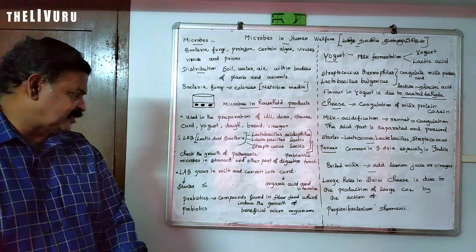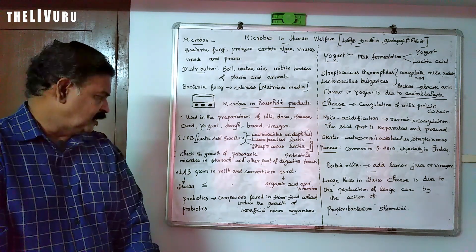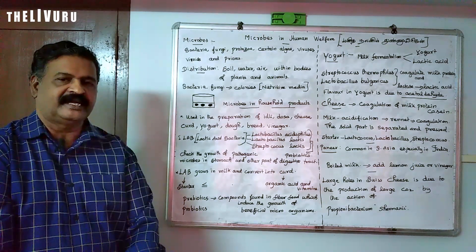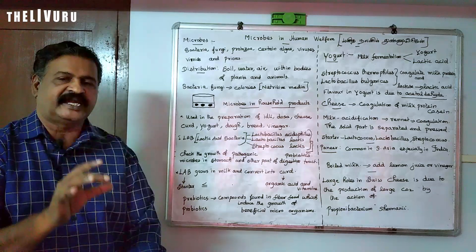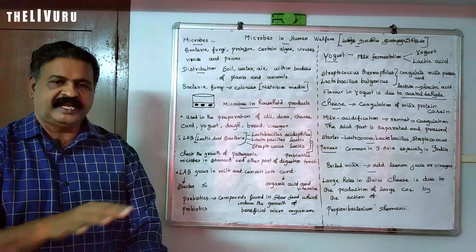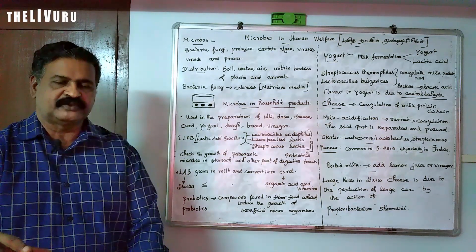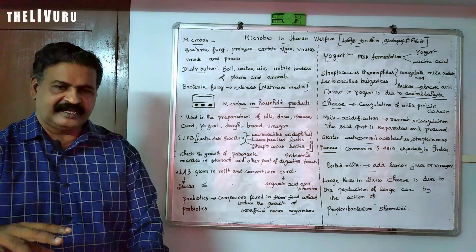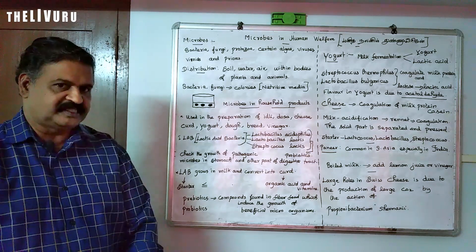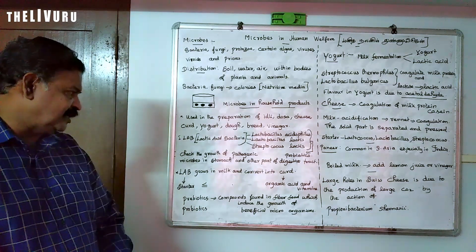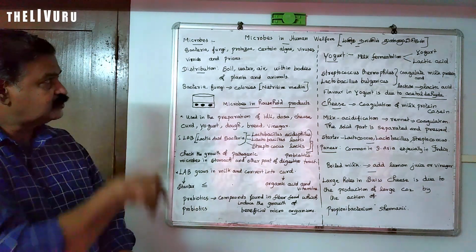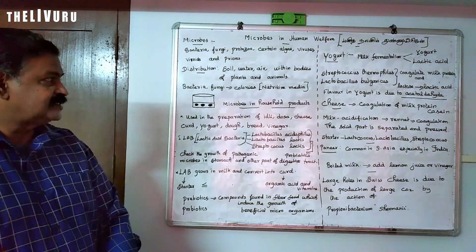When we compare these two food materials, curd is very good. Organic acids and vitamins are abundantly found in curd. We add a starter in the milk at 40 degrees Celsius. When we add curd as a starter, curd is formed.